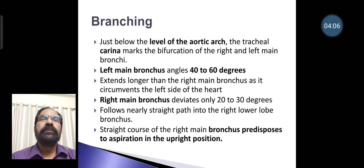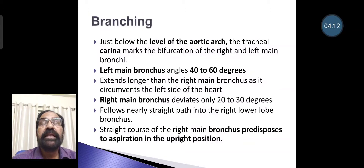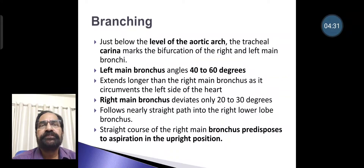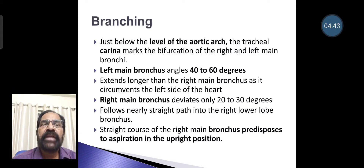Just before the level of the aortic arch, the tracheal carina marks the bifurcation of the right and left main bronchi. The left main bronchus angles 40 to 60 degrees and extends longer than the right main bronchus as it circumvents the left side of the heart, whereas the right main bronchus deviates only 20 to 30 degrees and follows a nearly straight path into the right lower lobe bronchus. The straight course of the right main bronchus predisposes to aspiration in the upright position.